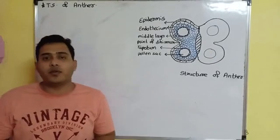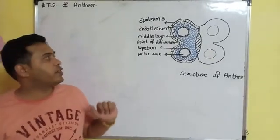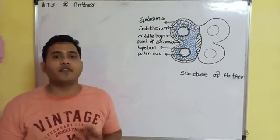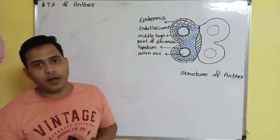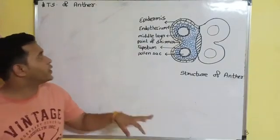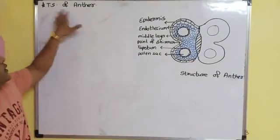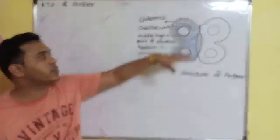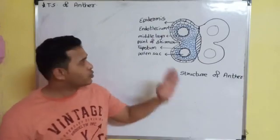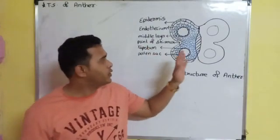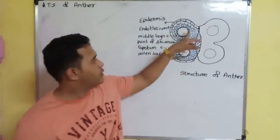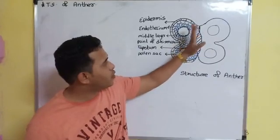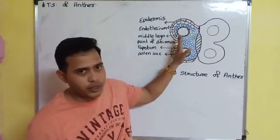In the last video we completed the structure of a typical flower. Now we are going to study the TS of anther — the internal structure of anther. We have drawn the cells of the anther on one side only.